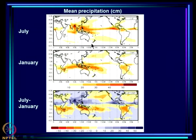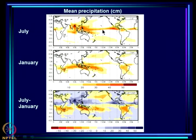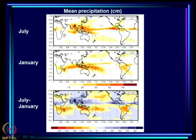Looking at precipitation, July rainfall shows the rain belt in the northern hemisphere, and there is also a second mode in the equatorial region in July. January rainfall shows the belt has shifted south. Subtracting July minus January rainfall shows that rain increases in July throughout the northern hemisphere, with a very large signal over our region. The change in sign across the difference reflects the shift of the rain belt from the southern to the northern hemisphere going from January to July.